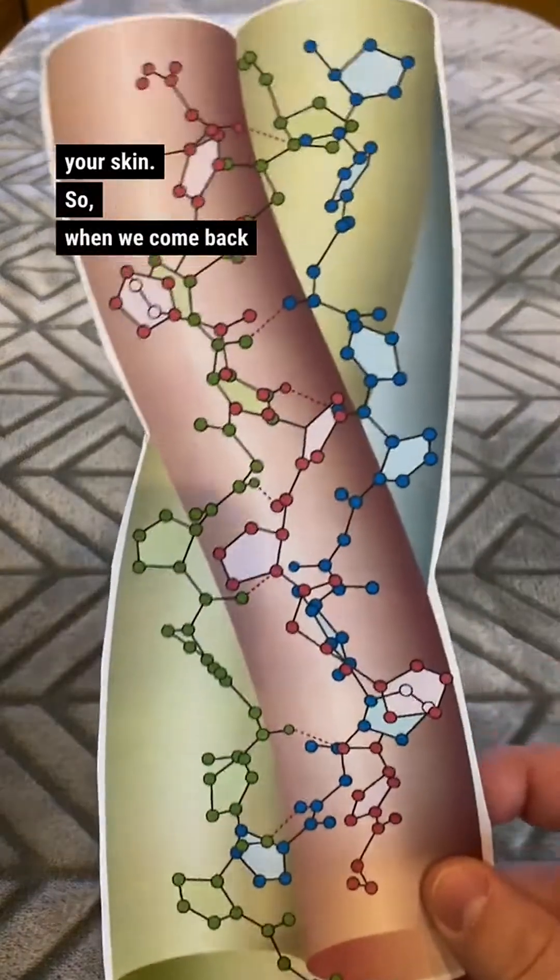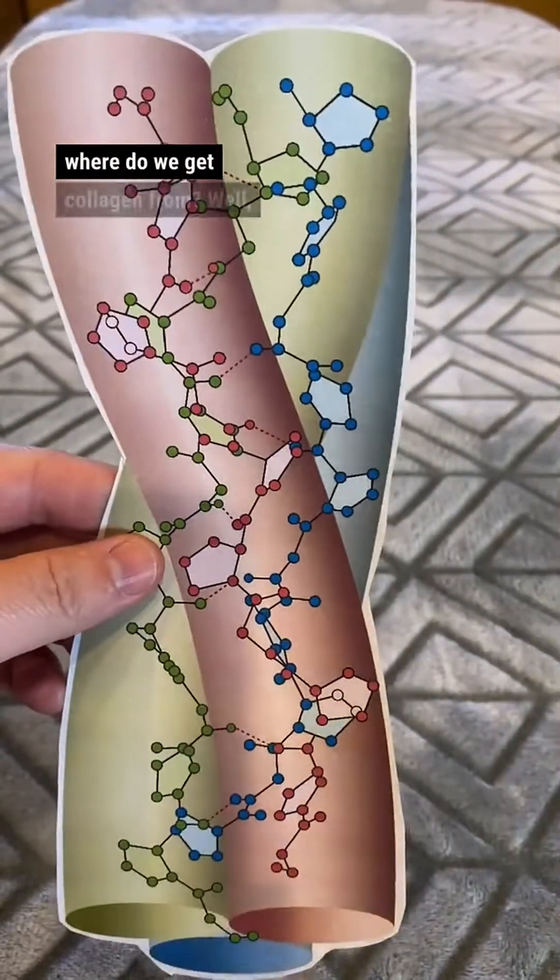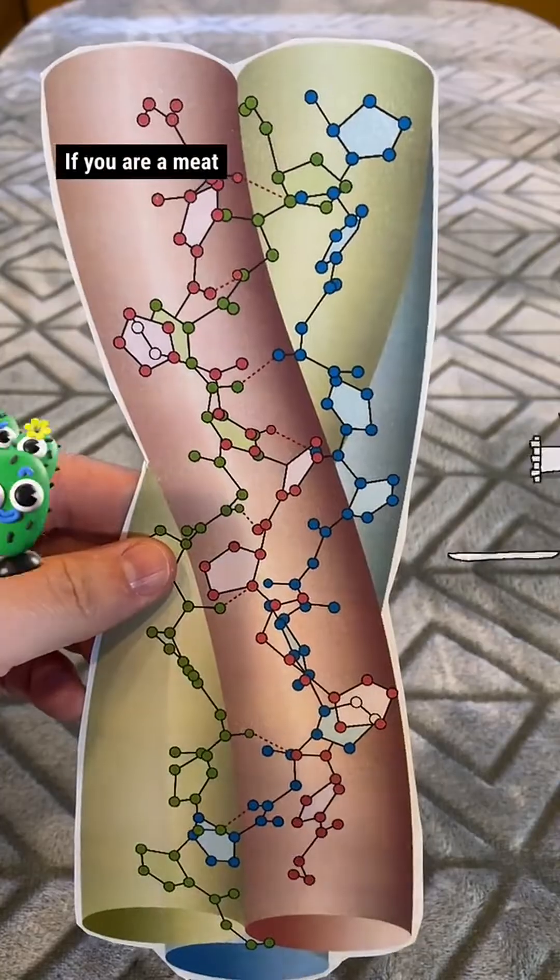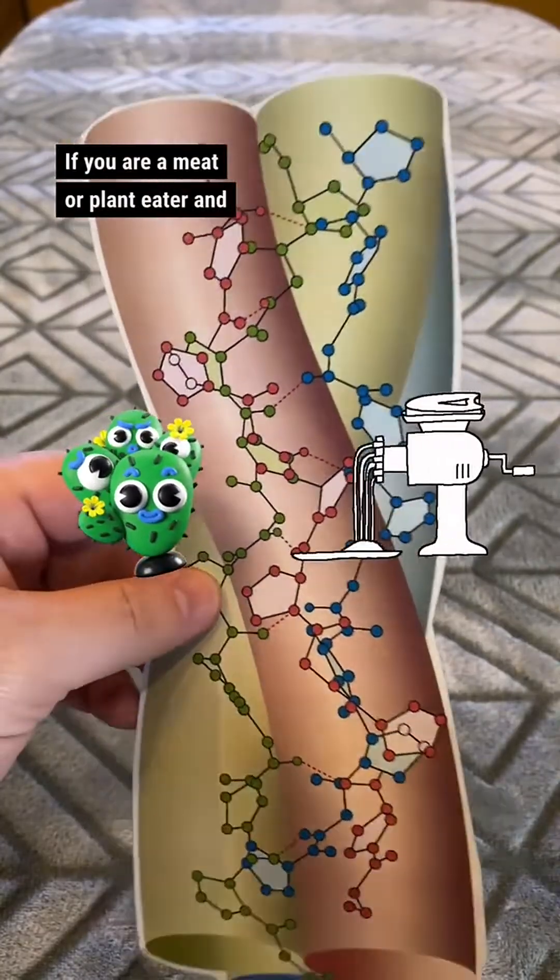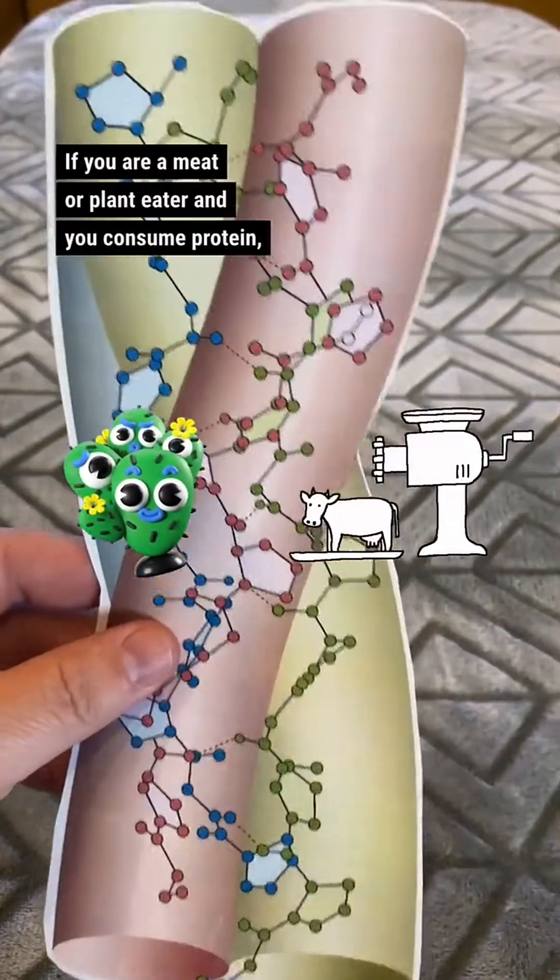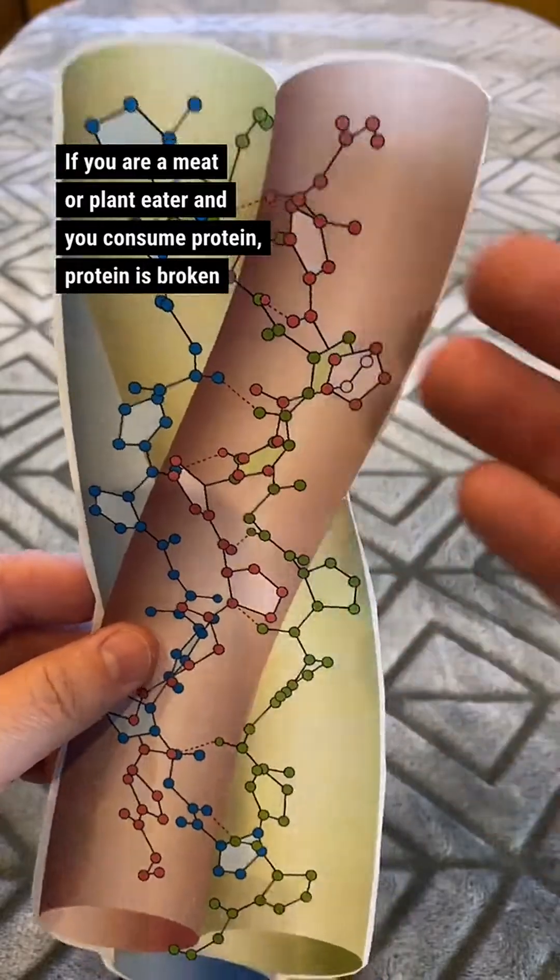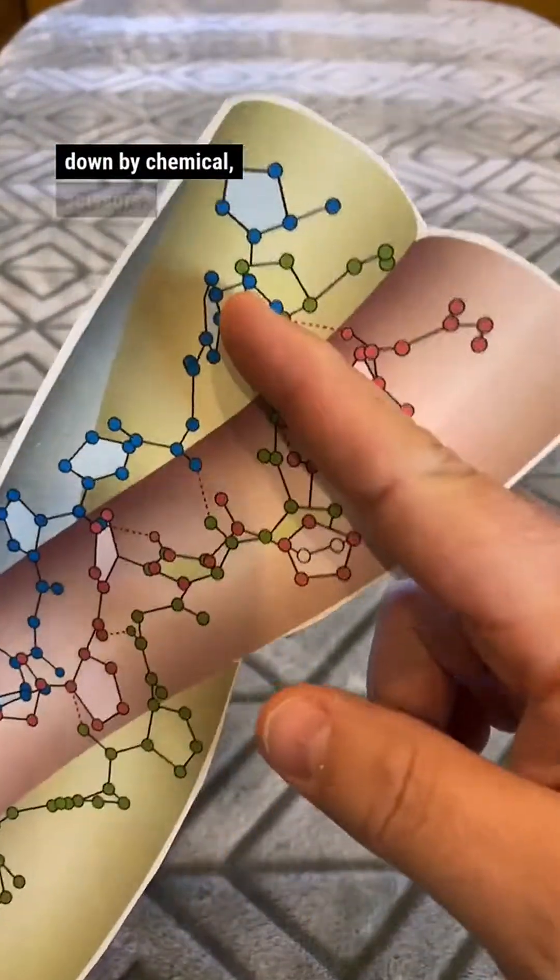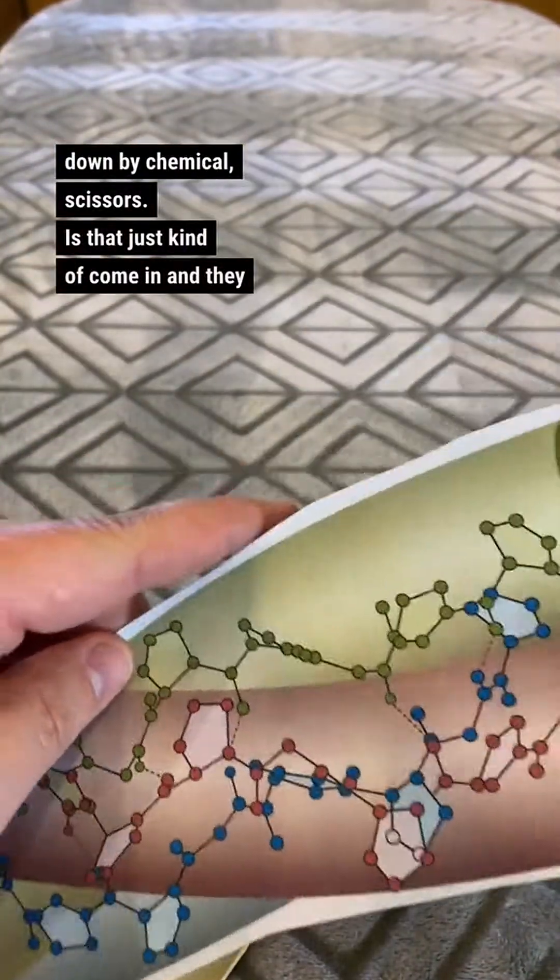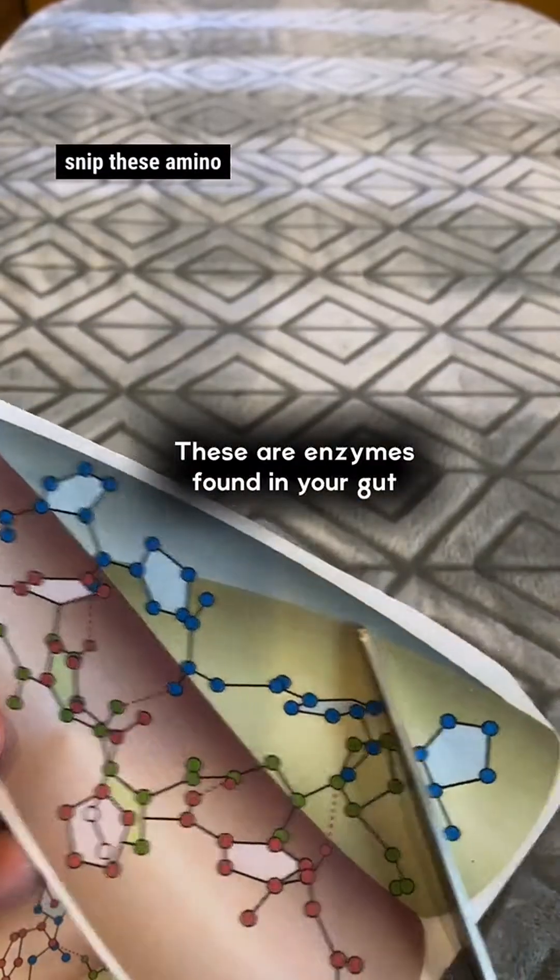So when we come back to this, where do we get collagen from? Well, it's actually quite easy. If you are a meat or plant eater and you consume protein, protein is broken down by chemical scissors that just kind of come in, and they snip these amino acids.